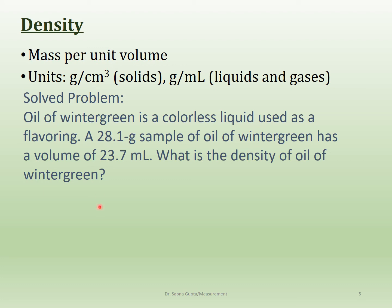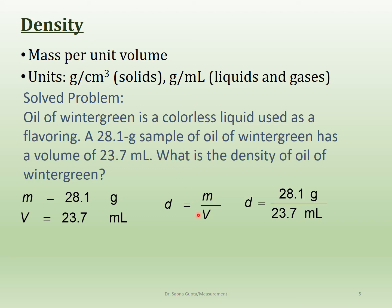The mass is given as 28.1 grams and the volume is 23.7 milliliters. The formula for density is mass over volume. Plug in all the values and look at your significant figures. In this case, we have three sig figs in both numbers, which means our final answer should also be in three significant figures. Always write your units.